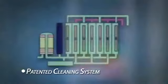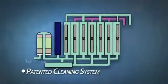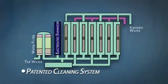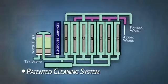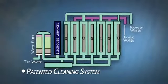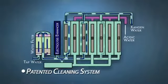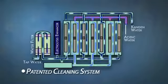Enagic ionizers are self-cleaning, and in addition, they have a cleaning maintenance cartridge to address the mineral buildup on the plates that occur with use. This cleaning system is a patented system. This allows the machines to produce the highest quality of Kangen water available and is why Enagic is the gold standard when it comes to water ionizers.